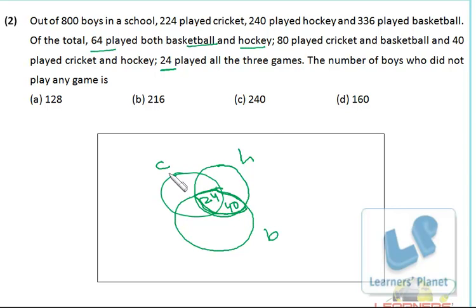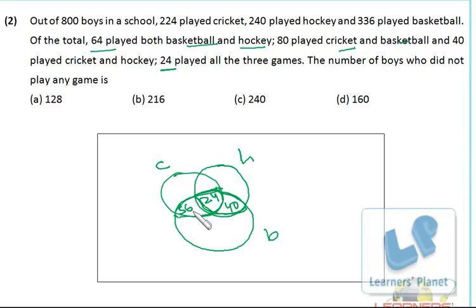Then 40 played cricket and hockey. This complete portion is 40. Since 24 is in the center, the remaining 16 goes in the cricket-hockey region. Now we have filled up all four intersection regions: 24 in the center, 40 in basketball-hockey only, 56 in cricket-basketball only, and 16 in cricket-hockey only.